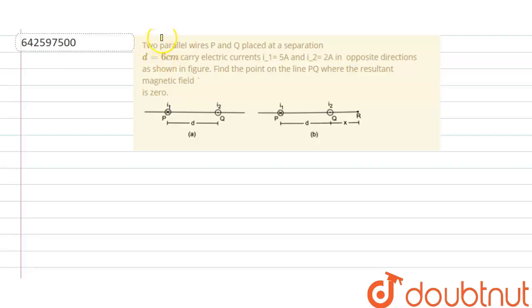Hello everyone, let's solve the question. The question says: two parallel wires P and Q placed at a separation of 6 cm carry electric currents i1 equals 5 ampere and i2 equals 2 ampere in opposite directions as shown in the figure. Find the point on the line PQ where the resultant magnetic field is zero.